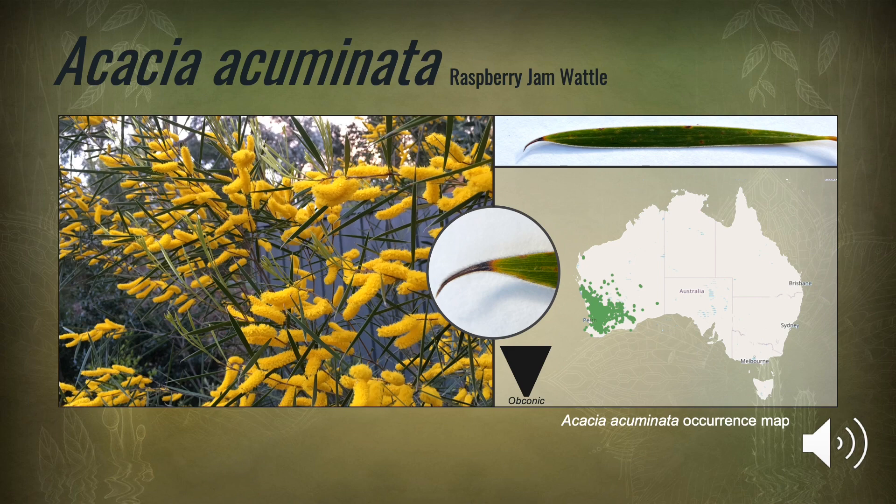Acacia acuminata is a shrub or tree, often multi-stemmed, that grows between 2 and 10 metres tall, usually in an obconic form, which is that of a cone shape. The botanical name is derived from the acuminate apex of the phylode, whilst the common name, raspberry jam wattle, refers to the strong scent of raspberry jam produced from freshly cut wood.